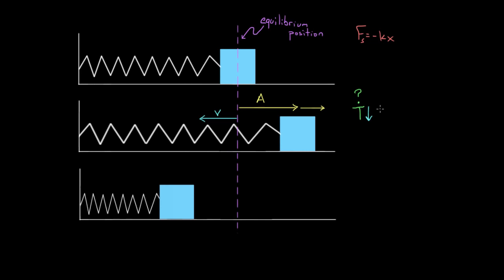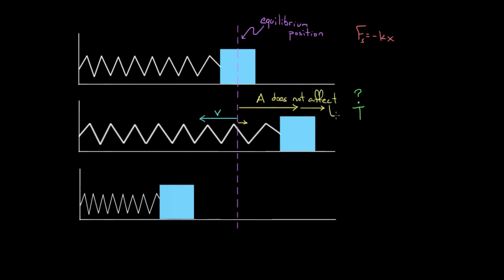It turns out those two effects offset exactly. The fact that this mass has farther to travel and the fact that it will be traveling faster offset perfectly, and it doesn't affect the period at all. This is kind of crazy, but something you need to remember: changes in amplitude do not affect the period at all. Pull this mass back a little bit — it'll oscillate with a certain period, say three seconds. Pull it back much farther — it still oscillates with three seconds. Amplitude does not affect the period for a mass oscillating on a spring.